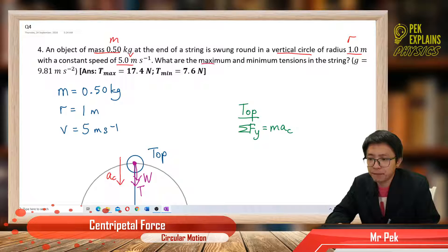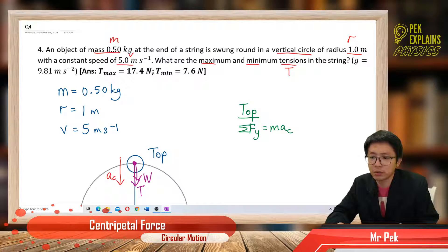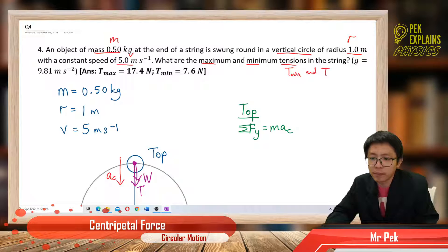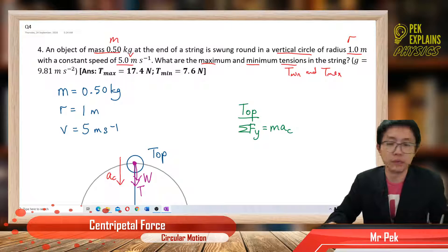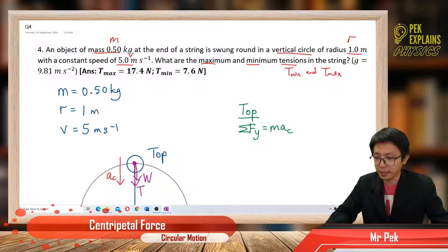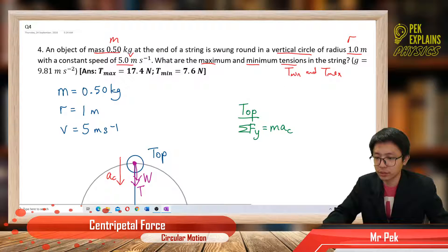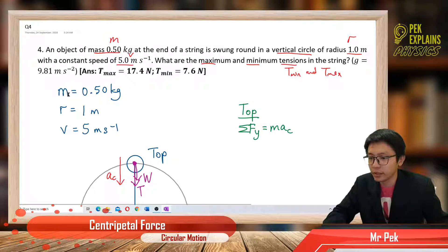We want to find maximum and minimum tension in the string — two values we need to find. G value we just use 9.81. So the values given are mass, radius, and velocity.